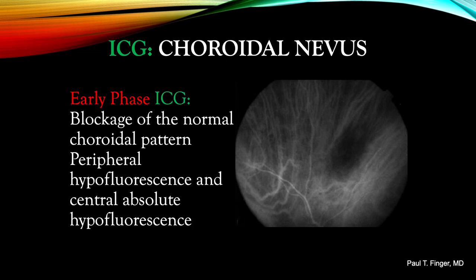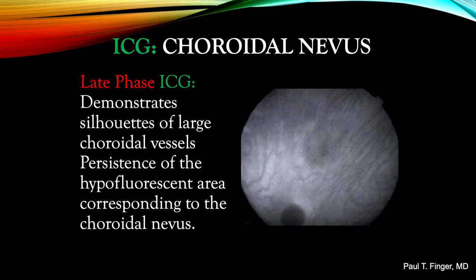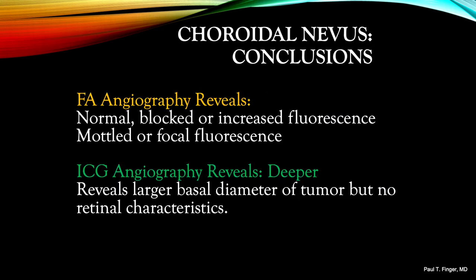In the early phase ICG, we see blockage of the normal choroidal pattern, peripheral hypofluorescence, and a central absolute hypofluorescence. In the late phase ICG, we see silhouettes of the large normal choroidal vessels with persistence of the hypofluorescent central area corresponding to the choroidal nevus. Even in the late phase, its pigment blocks fluorescence. In conclusion, choroidal nevus fluorescein angiography will reveal normal, blocked, or increased mottled hyperfluorescence. Focal fluorescence is seen with a breakdown of Bruch's membrane and the RPE, as well as tumor-associated choroidal neovascularization. Indocyanine green will reveal larger basal dimension tumors, but no retinal characteristics.